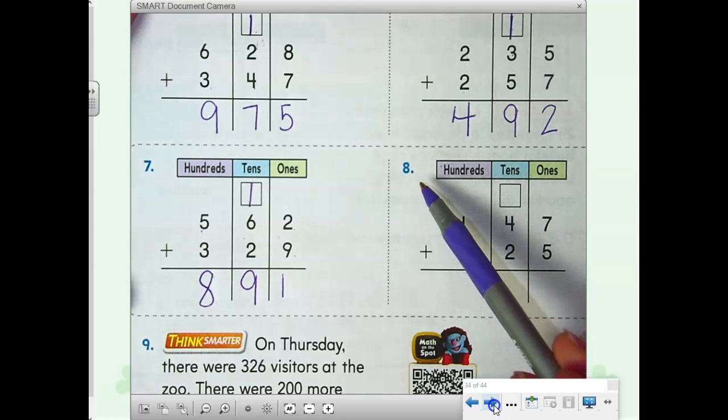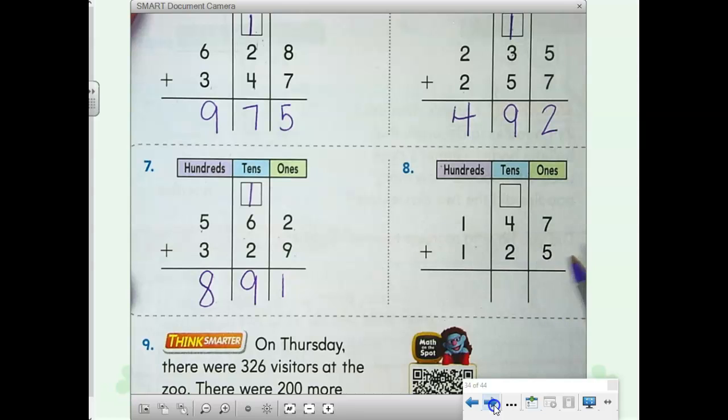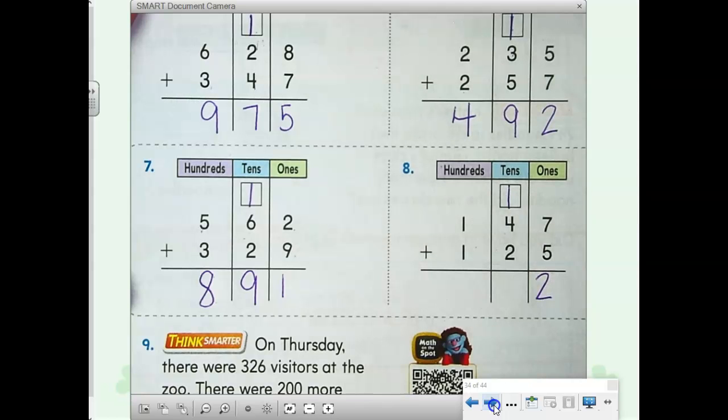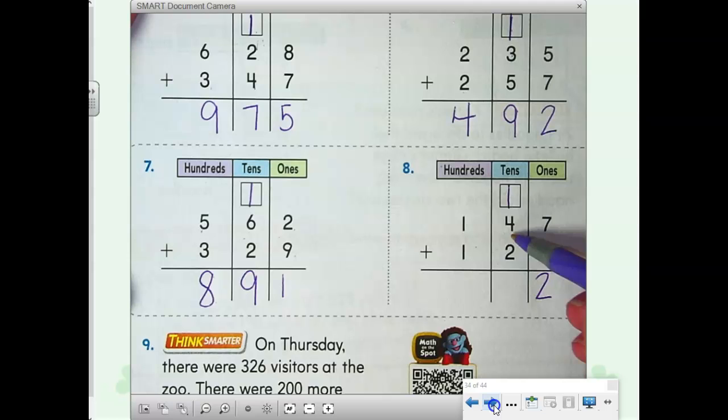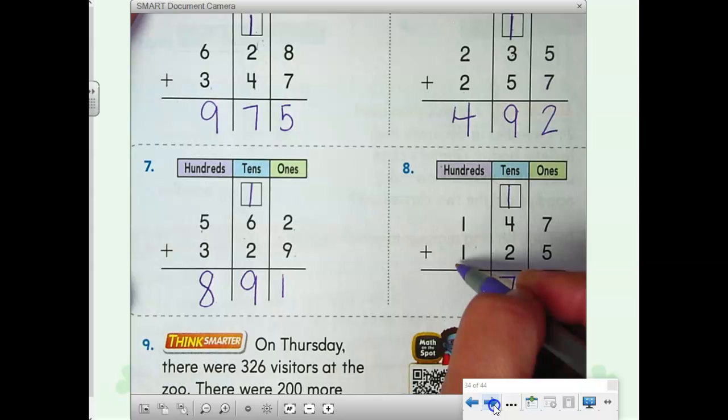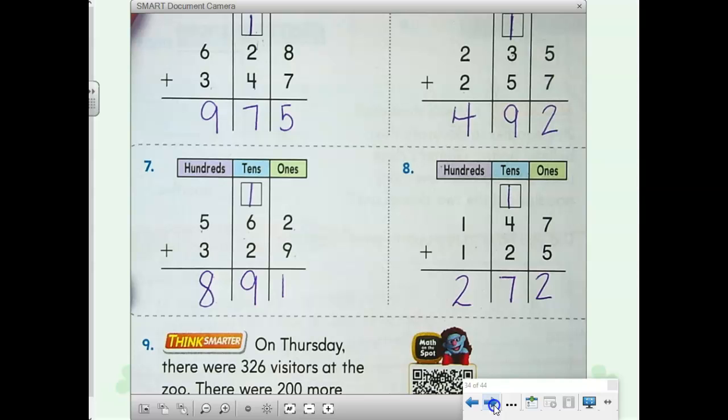Number 8, 147 plus 125. Start with your ones, 7 plus 5, 12. 1 ten and 2 ones. We have 3 numbers to add in our tens. 1 plus 4 is 5, 5 plus 2 more equals 7. Now look at your hundreds, 1 plus 1 equals 2. 272.